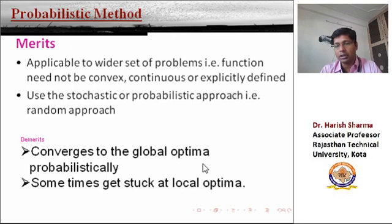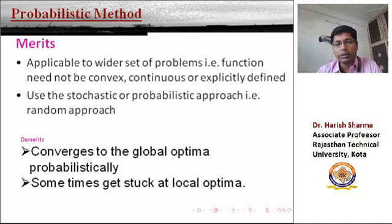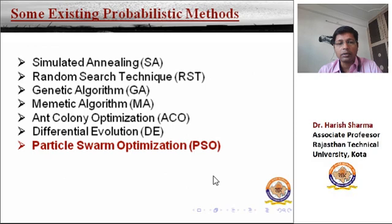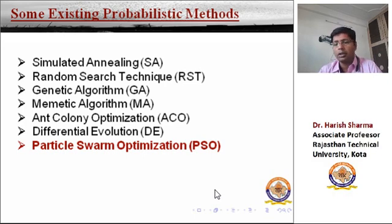Some of the existing probabilistic methods have demerits like they may converge to a global optima but can get stuck at a local optima. Some examples of probabilistic methods are: simulated annealing, random search, genetic algorithm, ant colony optimization, differential evolution, particle swarm optimization, artificial bee colony algorithm, biogeography-based optimization, and many more — over 500 algorithms are now available in research literature.